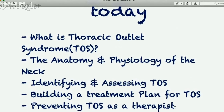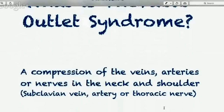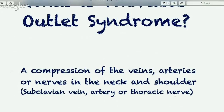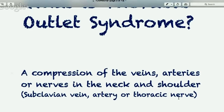So what is thoracic outlet syndrome? TOS occurs when there is compression of the veins, arteries, and nerves in the neck and shoulder — specifically the subclavian vein, the artery, or the thoracic nerves. Compression can be neural or vascular, and symptoms can vary depending on the location of compression or structures involved. The most common neurogenic signs occur when there is compression of the lower trunk of the brachial plexus, leading to pain, numbness in the medial arm and hand, upper extremity fatigue, and muscle atrophy.